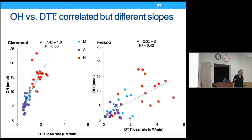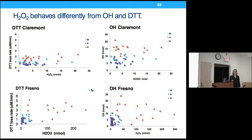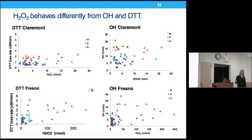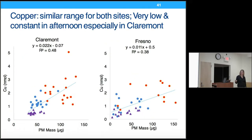Do the ROS assays agree with one another? Since DTT has the same slope at both sites but OH does not, plotting OH versus DTT gives different slopes for the two sites. In Claremont they're very tightly correlated, but in Fresno they're not so well correlated. Hydrogen peroxide is really not correlated with either OH or DTT. The takeaway is that the assays are measuring different things.